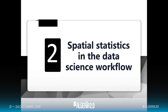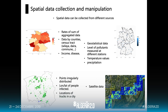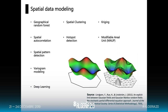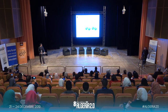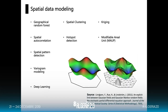If we talk about the process of making decisions using spatial data science, we start by collecting the data. There are generally four types of spatial data: aerial data, geostatistic or point-referenced data, point patterns, and satellite images. In spatial data modeling, there are many models used in the literature, like geographical random forest, spatial regression, and others.